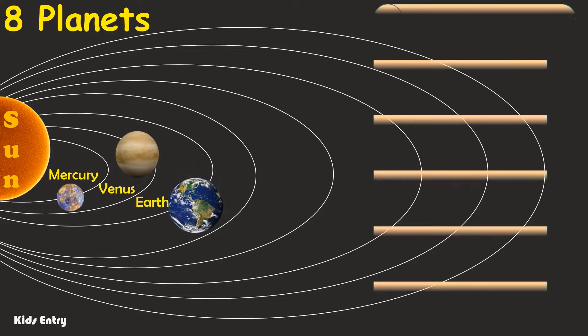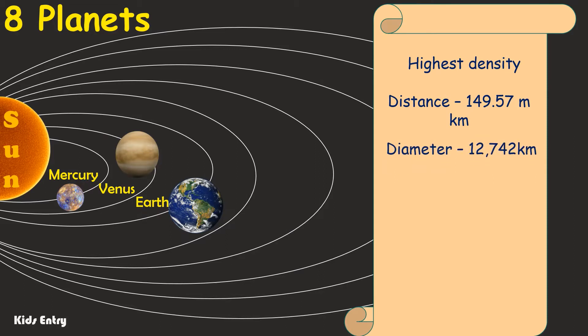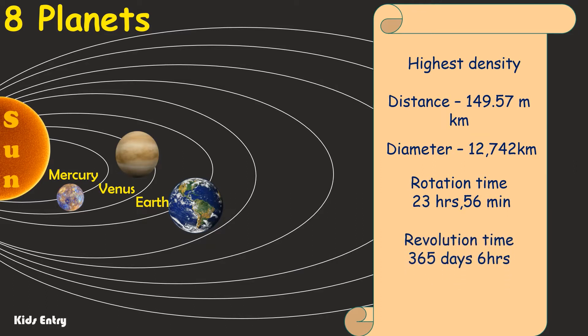Earth: the highest density planet in our solar system. Distance from the Sun to Earth is 149.57 million kilometers. Its diameter is 12,742 kilometers. One day on Earth lasts 23 hours, 56 minutes. One year on Earth lasts 365 days, 6 hours. It has one moon.